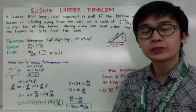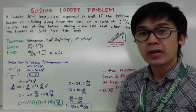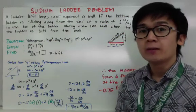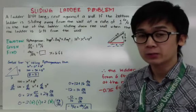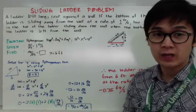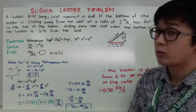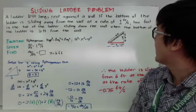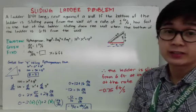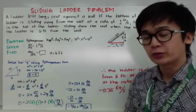Itong mga susunod na word problems involving related rates, medyo mas complicated siya dun sa mga naunang examples na ginamit ko. Kasi dito, kailangan natin hanapin yung isa sa mga variables bago tayo makapag-solve ng related rates problem. So, in this problem, sliding ladder problem: a ladder 10 feet long rests against the wall, and the question is if the bottom of this ladder is sliding away from the wall at a rate of 1 foot per second, how fast is the top of the ladder sliding down the wall when the bottom of the ladder is 6 feet from the wall? Unang-una, kailangan nyo ma-visualize kung ano ba yung tinatanong doon sa problems.